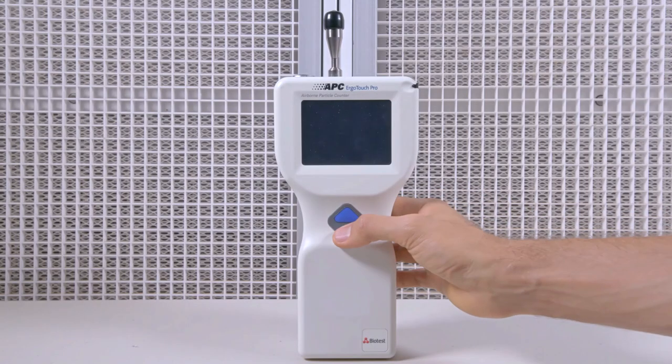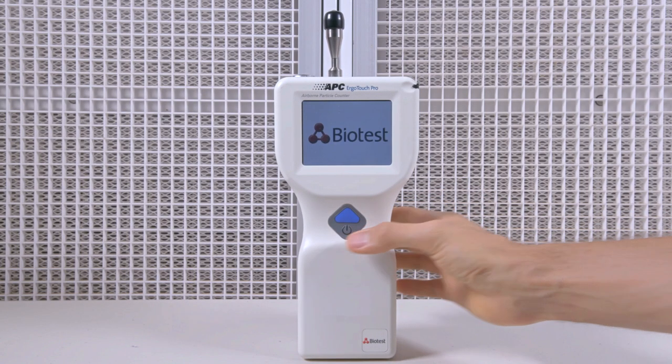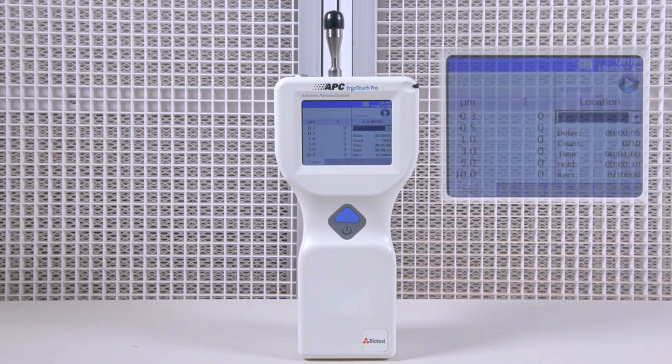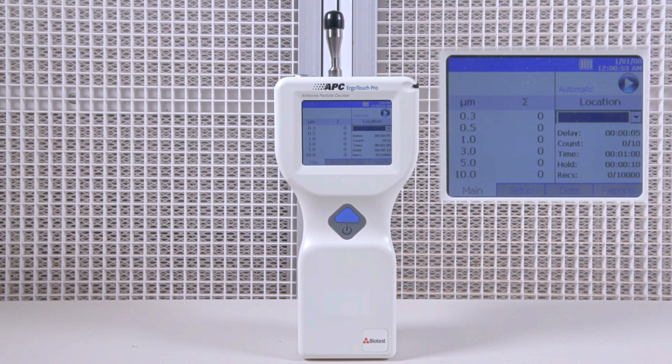Now for the test. Here is the air particle counter we will be using. We have it set up to measure 6 different particle sizes: 0.3, 0.5, 1, 3, 5, and 10 microns.